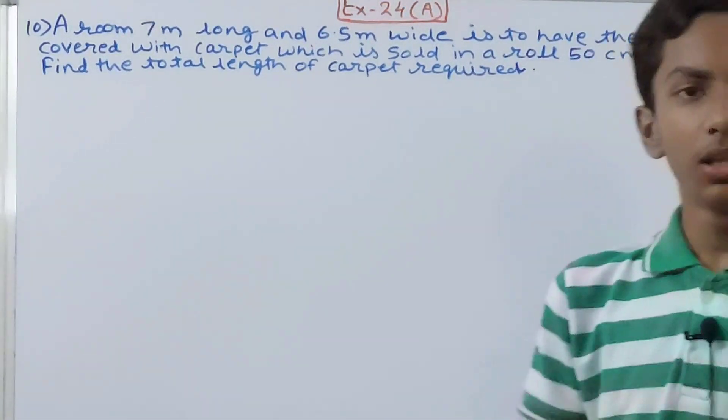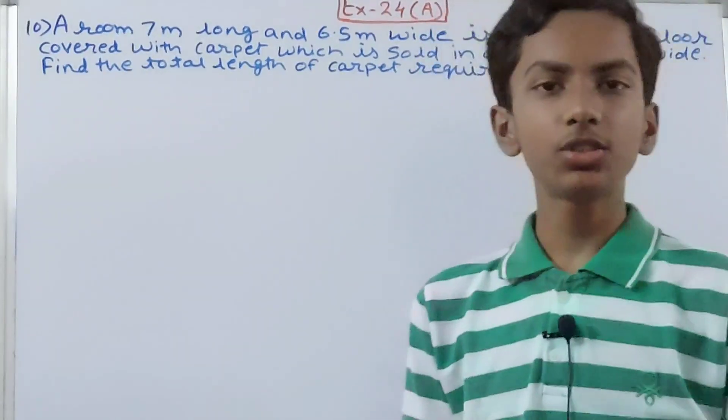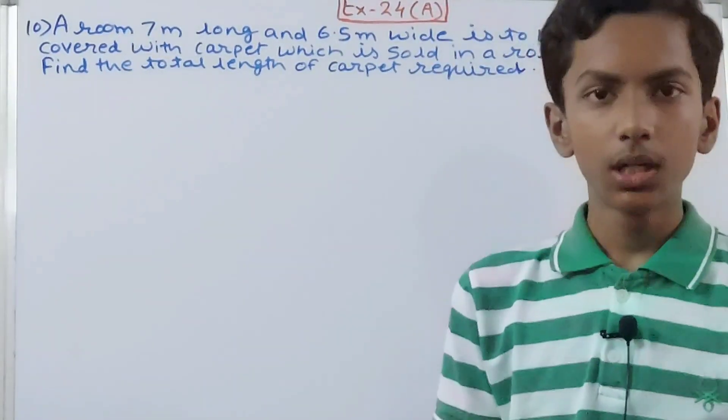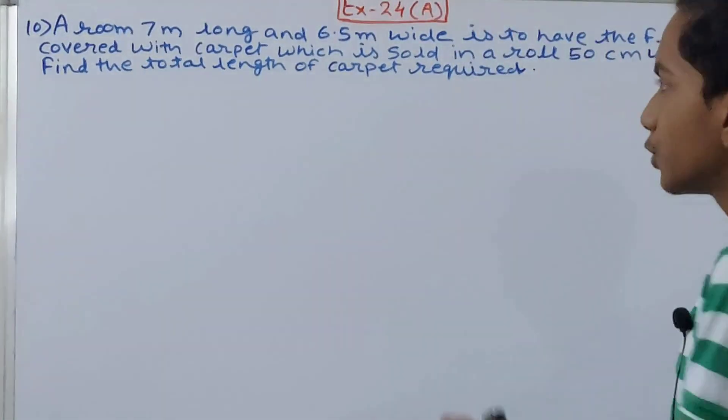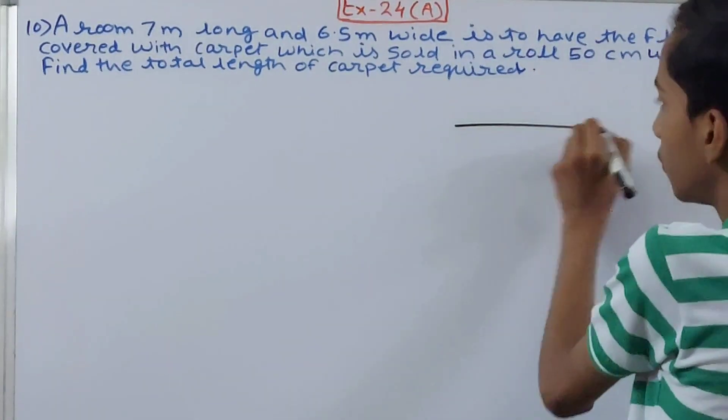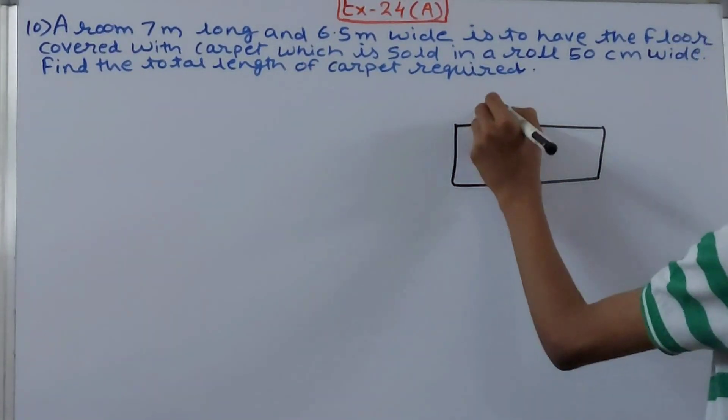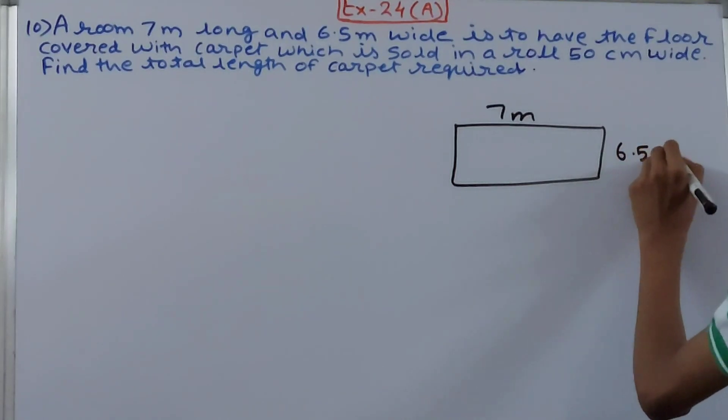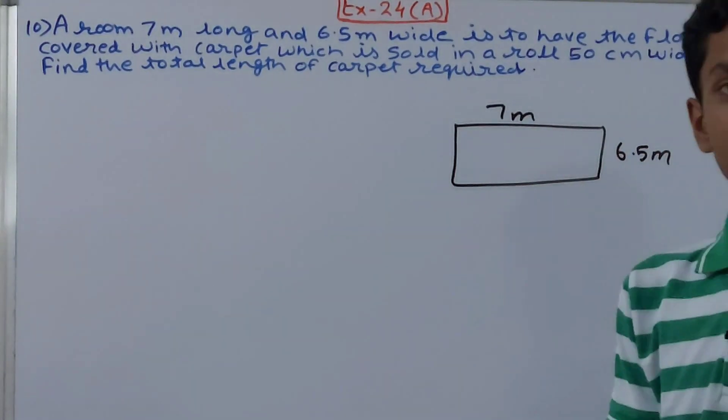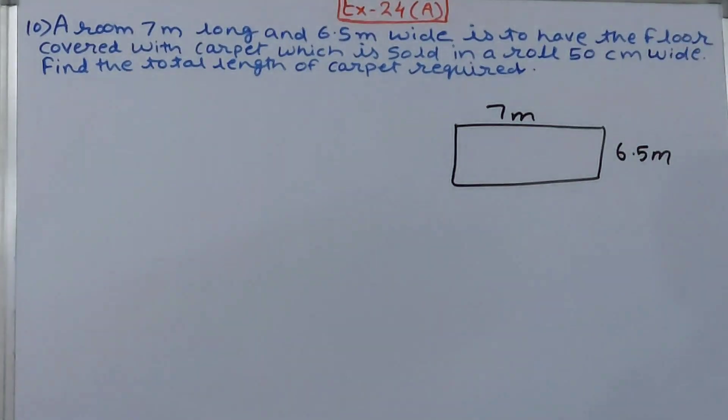We have to cover the floor of a room with carpet, and the carpet is sold in rolls. That roll is 50 centimeters wide. Suppose this is the floor of the room - the length is 7 meters and the breadth is 6.5 meters. We have to cover this with the carpet completely.